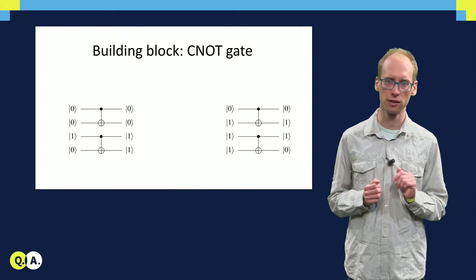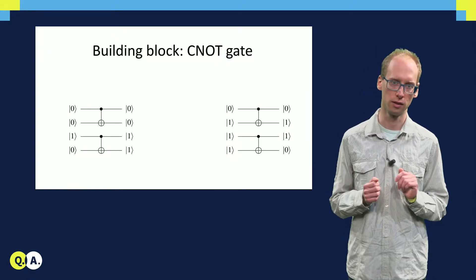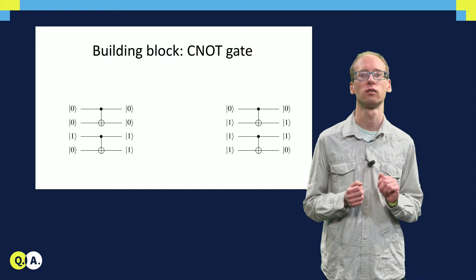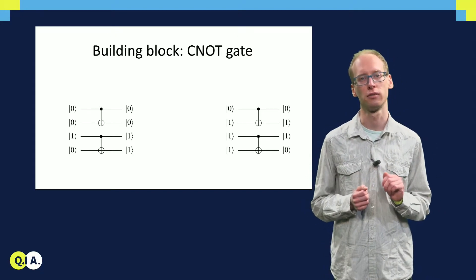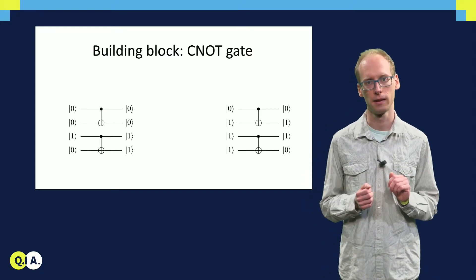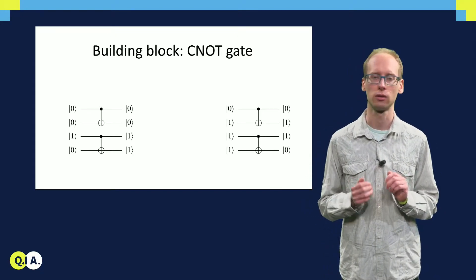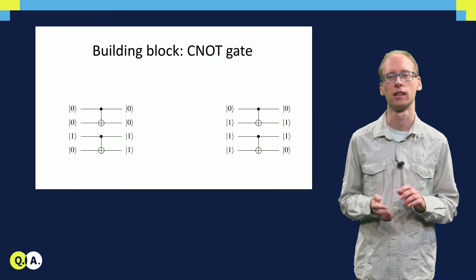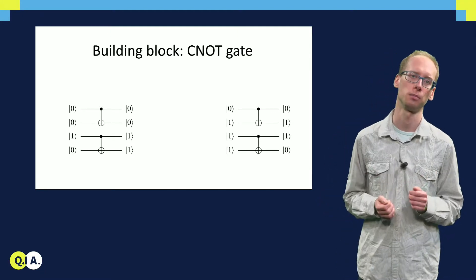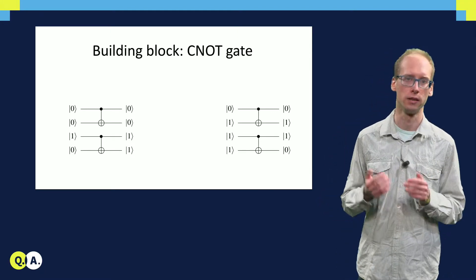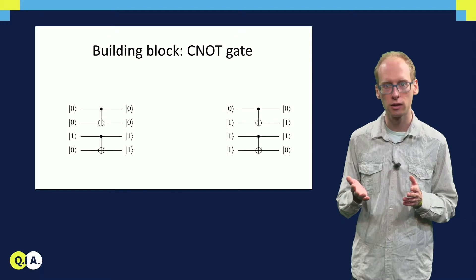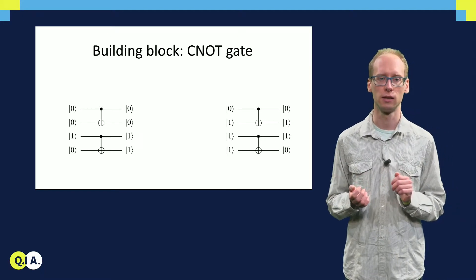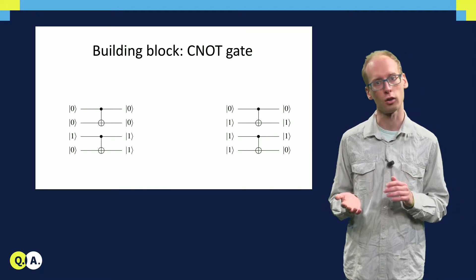The procedures that we will consider here include a control NOT gate, which has already been discussed before. This quantum gate is very analogous to its classical counterpart. In the classical scenario, depending on the value of the first bit, the second bit is flipped or not.